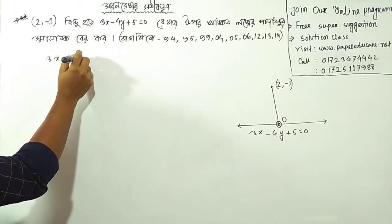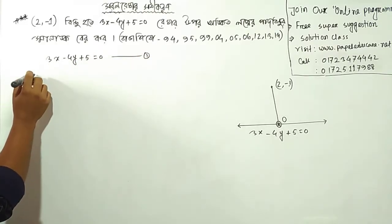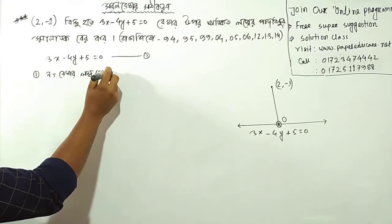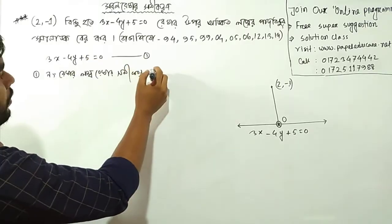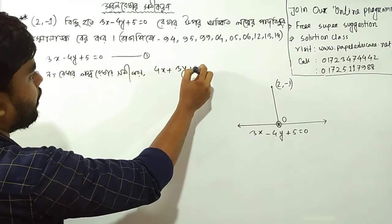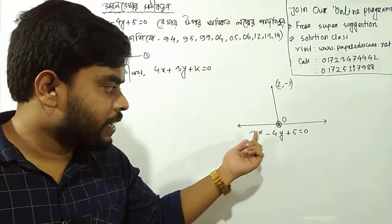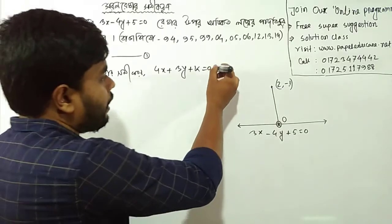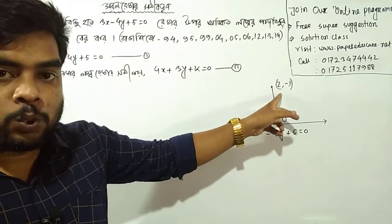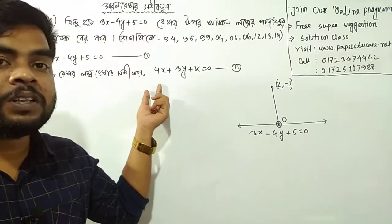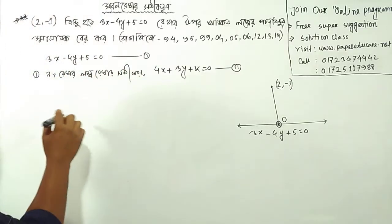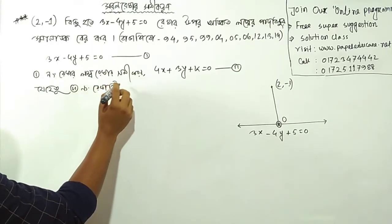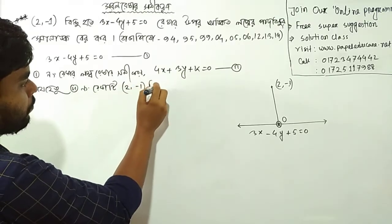2x minus 4y plus 5 is equal to 0. 1x plus 3y plus k is equal to 0. 1x plus 4x plus 2y plus k is equal to 0. 1x plus k is equal to 0. 2 minus 1 is equal to 0.